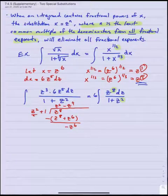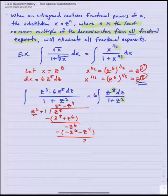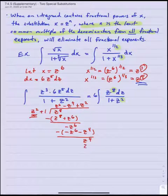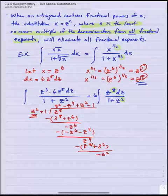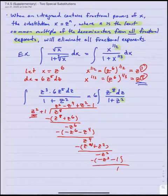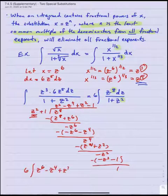Re-multiplying by the divisor gives me minus z to the sixth minus z to the fourth. Subtracting gives a new remainder of z to the fourth. Dividing z squared into that remainder gives z squared. Re-multiplying by the divisor gives z to the fourth. The remainder is minus z squared. Re-dividing gives minus 1. Re-multiplying by z squared plus 1 gives minus z squared minus 1. Subtracting gives a remainder of 1. That means my problem is now 6 times the integral of z to the sixth minus z to the fourth plus z squared minus 1 over the divisor z squared plus 1.